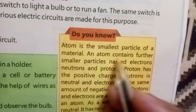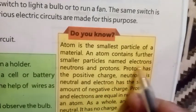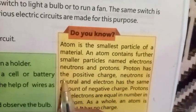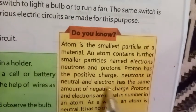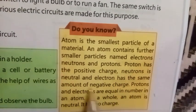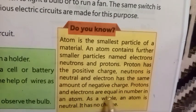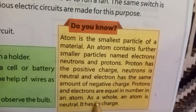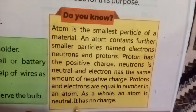Do you know an atom is the smallest particle of a material? An atom contains further smaller particles named electrons, neutrons, and protons. A proton has positive charge, a neutron is neutral, and an electron has the same amount of negative charge. Protons and electrons are equal in number in an atom. As a whole, an atom is neutral — it has no charge.